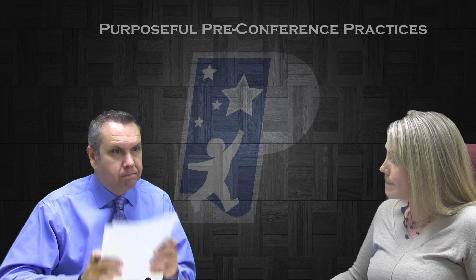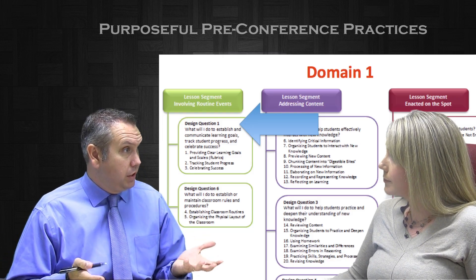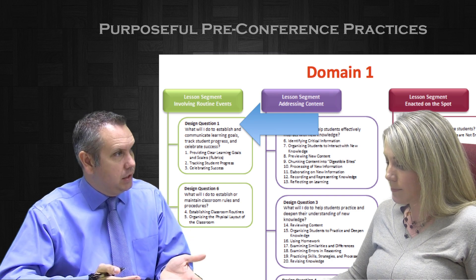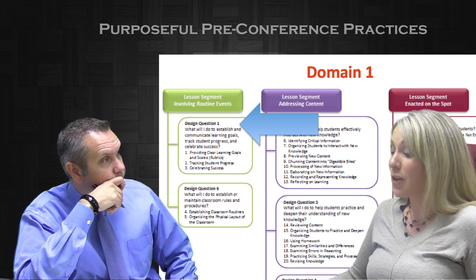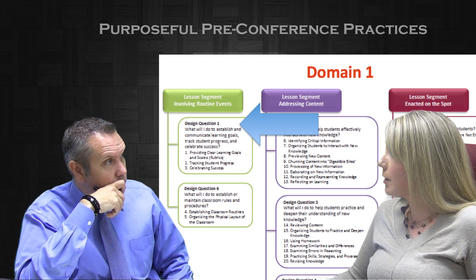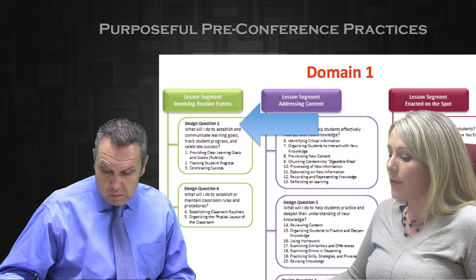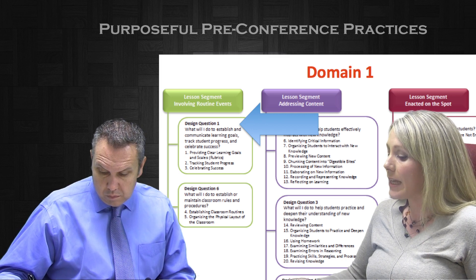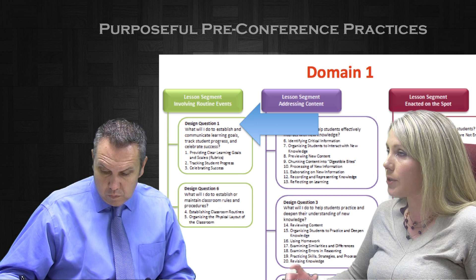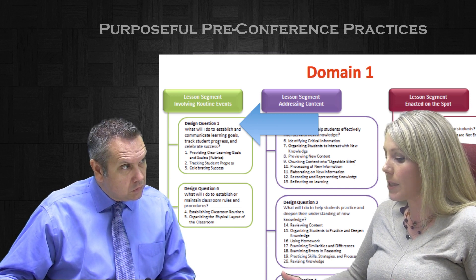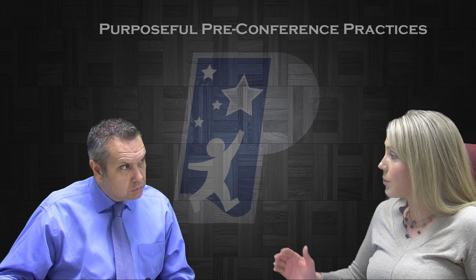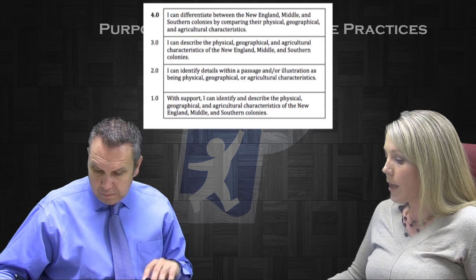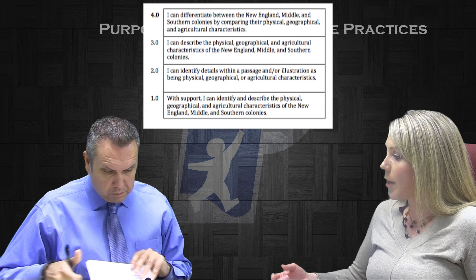So when we're looking at design question one routine events — setting clear learning goals, tracking student progress, and celebrating success — how will I see any of that going on tomorrow? You will. We have the learning goal always posted on the whiteboard, and students have their academic notebooks where they record the learning goal. We're going to be using those notebooks in class at different points during activities. We also have a scale posted on the front board and they also have that in their academic notebook. I provided you a copy of the scale in the folder as well. We'll be referring to the scale at the beginning of the lesson and going back to it at the end.